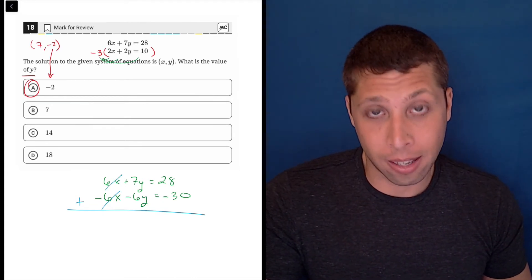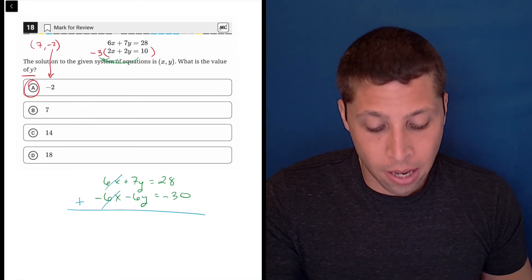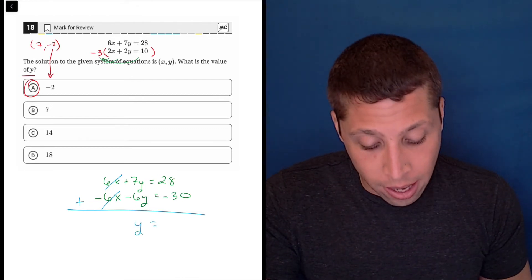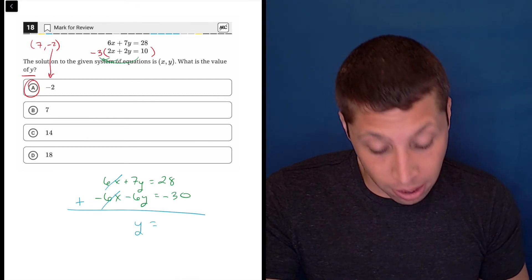the x's cancel. 6x minus 6x is 0. 7y minus 6y is just 1y. And 20 minus 30 is negative 2.